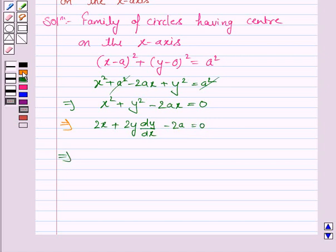So this implies x + y dy/dx - a = 0. So this implies a = x + y dy/dx. Let us name this as (1).